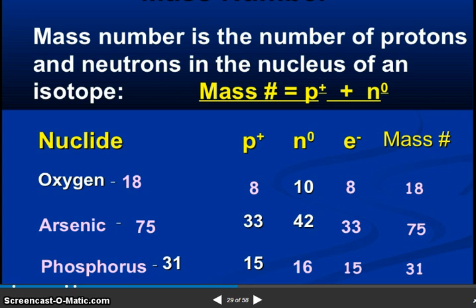So mass number. Mass number is the number of protons and neutrons in the nucleus of an isotope. Nucleides: P plus, N zero, E minus. So oxygen 18, 8 protons, 10 neutrons, 8 electrons, mass number 18. Arsenic and phosphorus examples.